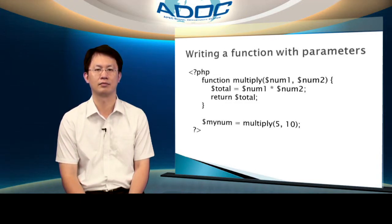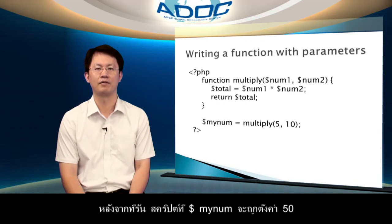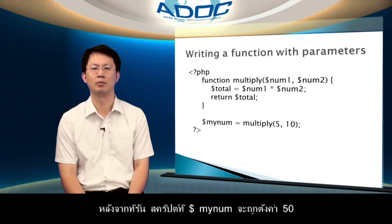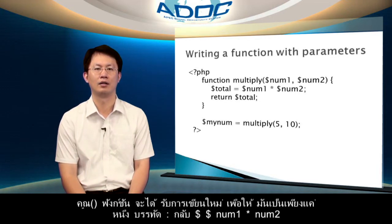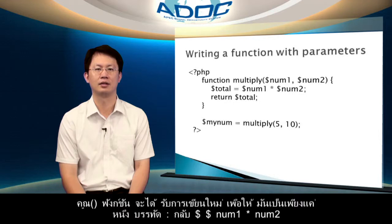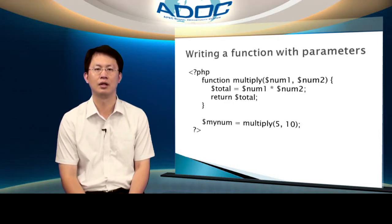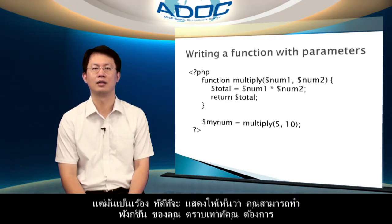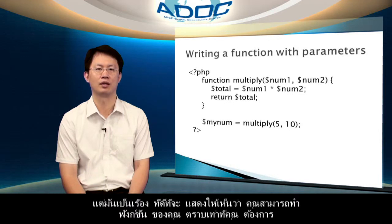Like this. And after running the script, my_nums will be set to 50. The multiply function could have been rewritten so that it was just one line: return num1 * num2. But it is good to show that you can make your functions as long as you want.